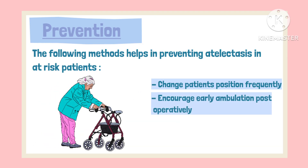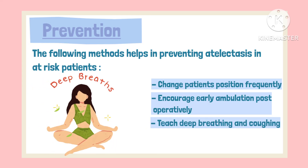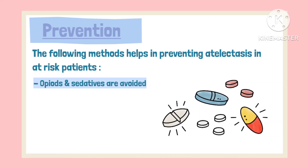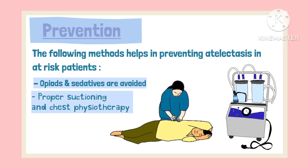Post-operative patients are encouraged to ambulate as soon as possible to prevent accumulation of secretions in the airways. Breathing techniques and coughing are encouraged in patients at risk. Incentive spirometry — a device into which the patient blows — is used to help the lungs and alveoli expand fully. Opioids and sedative medications, which can depress respiration, are avoided. Proper suctioning and chest physiotherapy help prevent accumulation of thick, tenacious mucus.